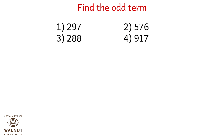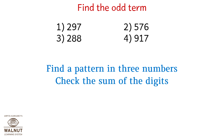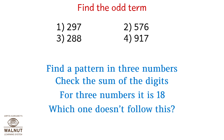Find the odd term: 297, 576, 288, 917. Find a pattern in the three numbers. Which one doesn't follow this? It's option 4: 917.